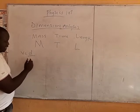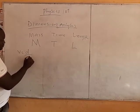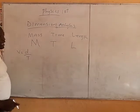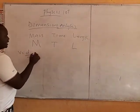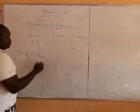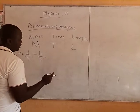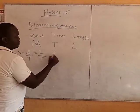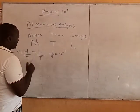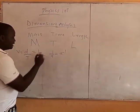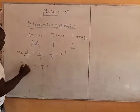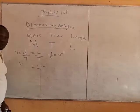Velocity is distance all over time. So if velocity is distance all over time, that means distance is measured in meters and time is measured in seconds. And in the law of indices, whenever you have 1 over a, that equals a to the minus 1. So since this is L over T, the dimension would now be LT⁻¹. So the dimension of velocity is LT⁻¹.